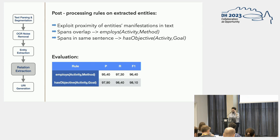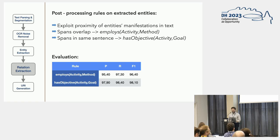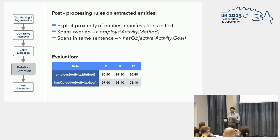After entity extraction, sentences are fed into the relation extraction module, where we use post-processing rules to extract two types of relations: the 'employs' relation, associating Activities with Methods, and the 'has objective' relation, associating Activities with Goals. For the 'employs' relation, when two spans overlap we automatically create the relation. For 'has objective', we use a more elastic rule: when spans are in the same sentence, the relation can be created. Evaluation based on 1,000 sentences per relation type shows quite high numbers, justified by the nature of these relation types that allows us to use the sentence as the primary environment for classification.